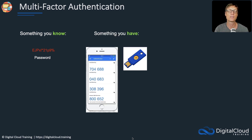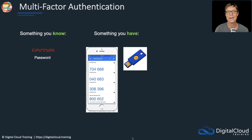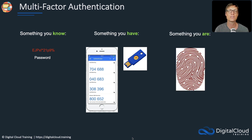Another factor of authentication is something you have. In this case, you have a physical device, like a token or a device that generates a code. Only you can know that code, because only you have that physical device in your possession. Lastly, there's something you are — this is biometrics, like fingerprints or retina scans. We don't use these in AWS, but we do use the first two.